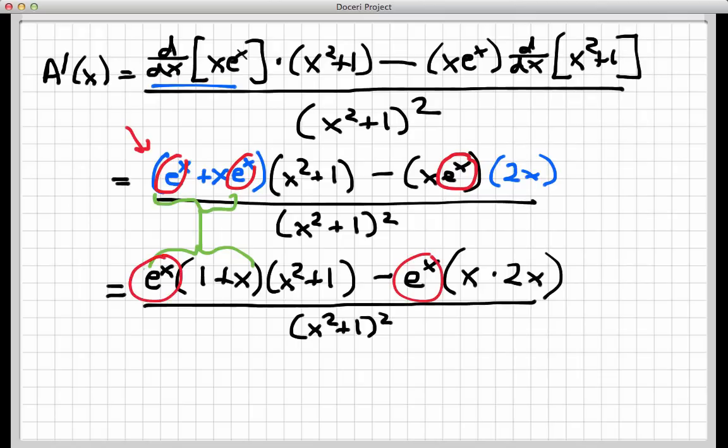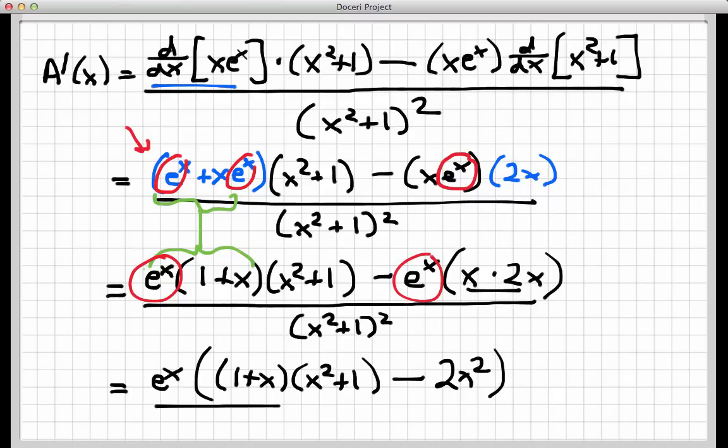Now what I have here now is in the numerator are two terms being subtracted, each of which has a factor of e to the x. So I can pull that e to the x completely out. And here's what I got left on the top. I have a 1 plus x times x squared plus 1 minus this expression here is 2x squared. And this is all over x squared plus 1, the quantity squared. Let's go over to another slide and finish this off.